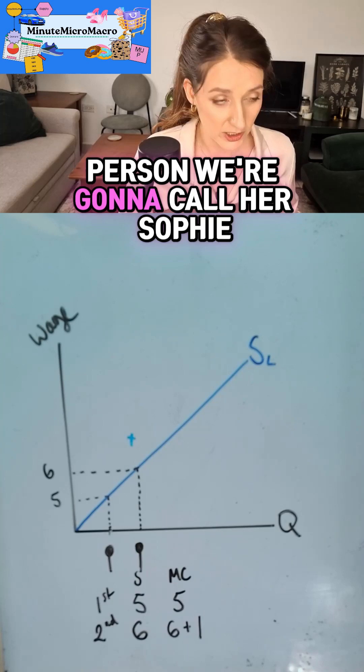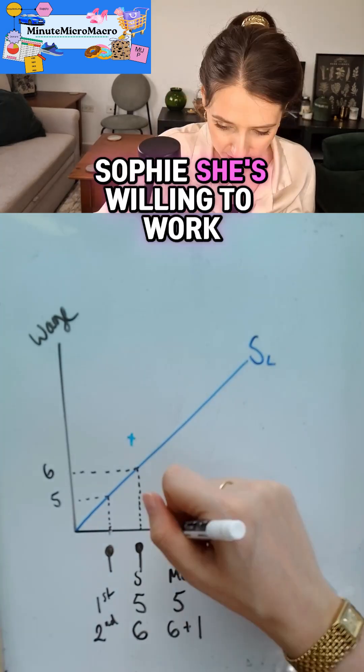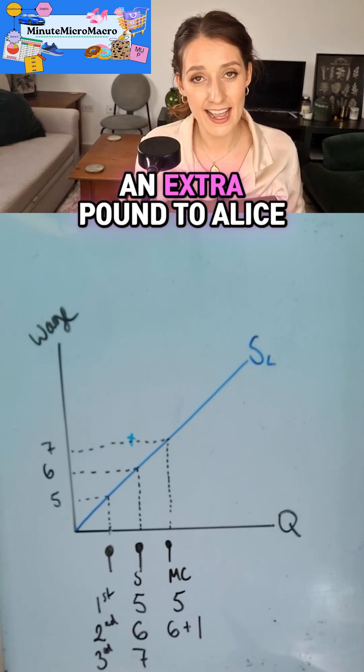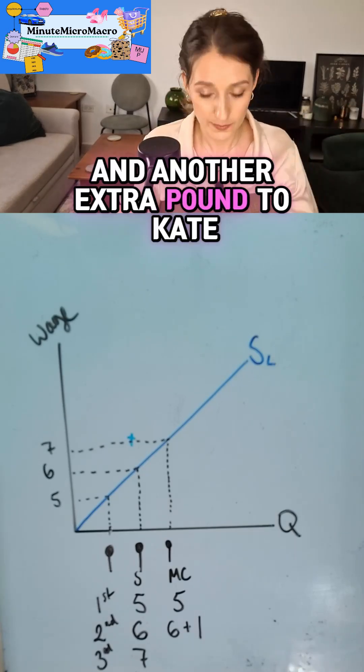Now I'm going to hire a third person, I'm going to call her Sophie. There she is. Sophie, she's willing to work for seven pounds. But hiring her means I need to give an extra pound to Alice and another extra pound to Kate.